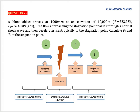Compressible flow tutorial number 22. A blunt object travels at 1,000 meters per second at an elevation of 10,000 meters. Temperature T1 is 223.23 Kelvin, and P1 is 26.48 kilopascal absolute. The flow approaching the stagnation point passes through a normal shockwave and then decelerates isentropically to the stagnation point. Calculate P0 and T0 at the stagnation point.